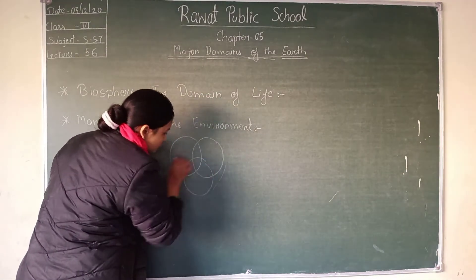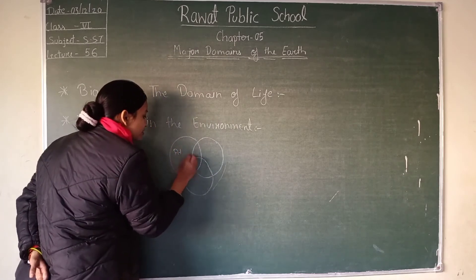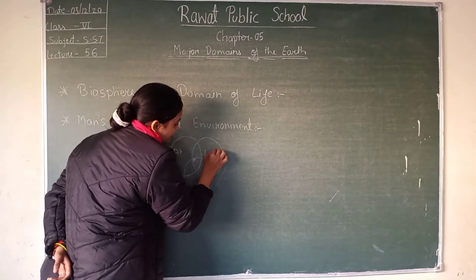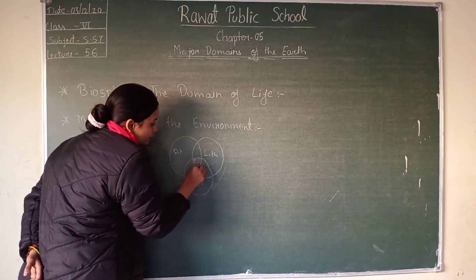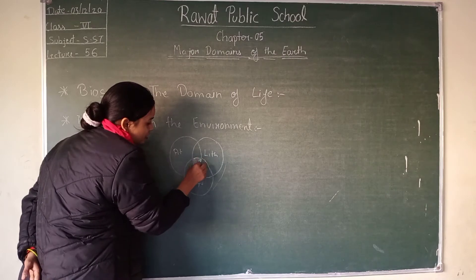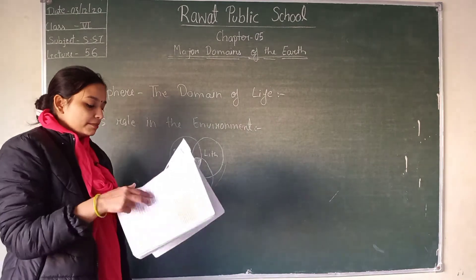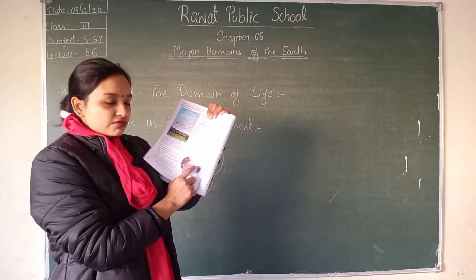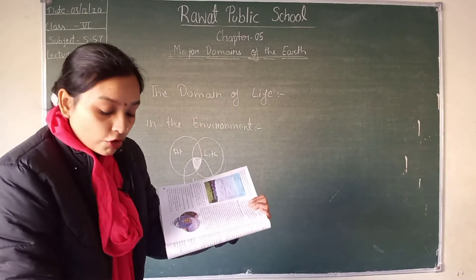Biosphere is a transitional area where we can see the atmosphere, the lithosphere, and the hydrosphere. It is the connected, transitional portion of all three. In the diagram, lithosphere is related to land, atmosphere is related to air, and hydrosphere is related to water.